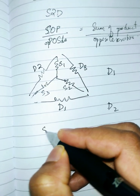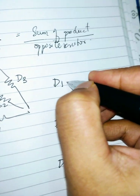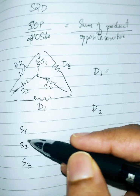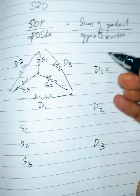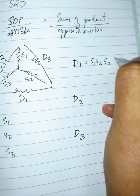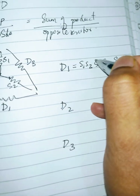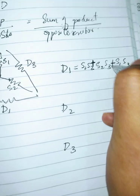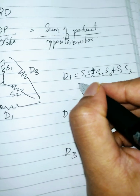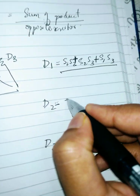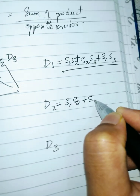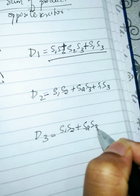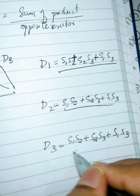You need to find the values of D1, D2, and D3, given S1, S2, and S3. Using the SOP rule — sum of products — pair them up: S1·S2, S2·S3, and S1·S3. Add all pairs together. The numerator is the same for every formula: S1S2 + S2S3 + S1S3.